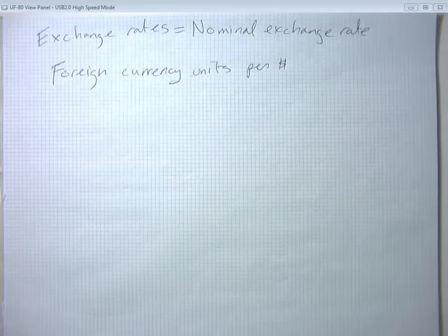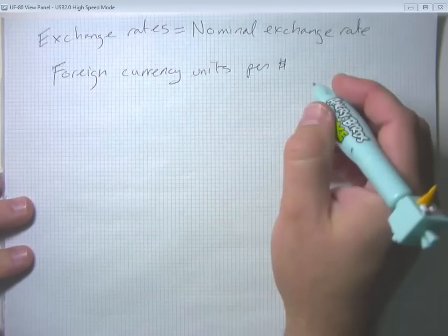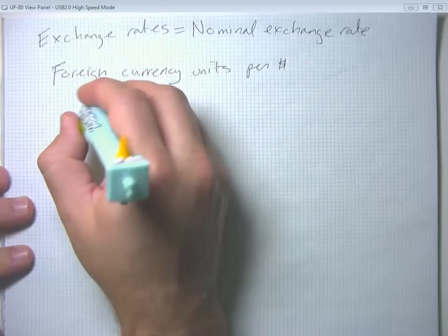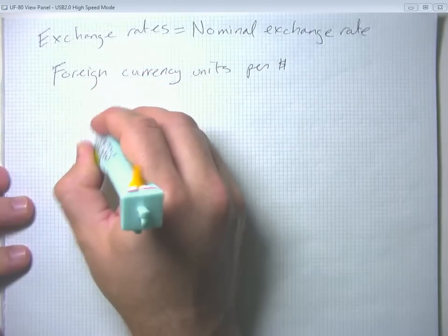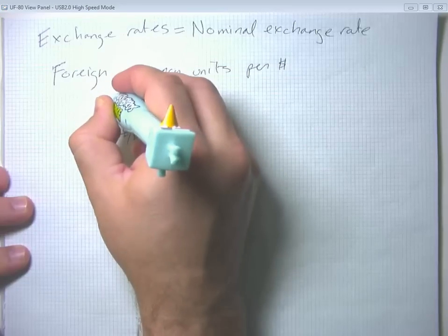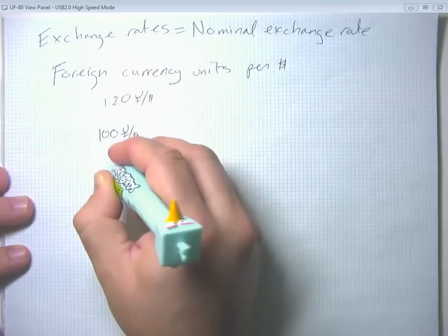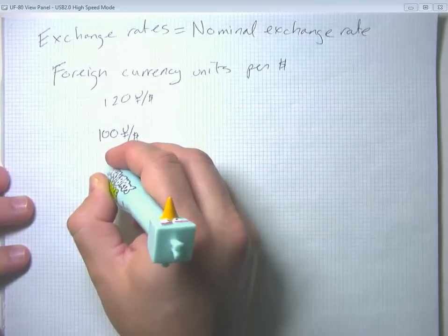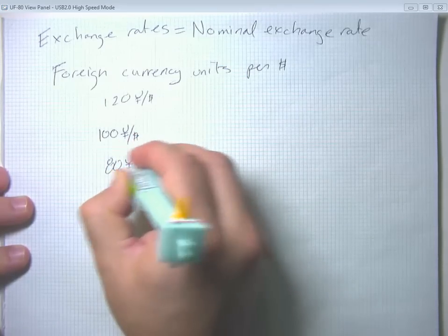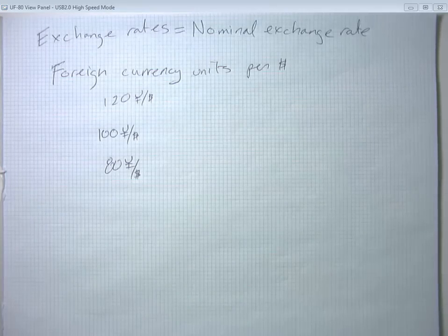And I'm going to go ahead and parallel the Mankiw textbook here and think about yen. So we might have the exchange rate be 100 yen per dollar, or we might have it be 120 yen per dollar, and we can have it be 80 yen per dollar.